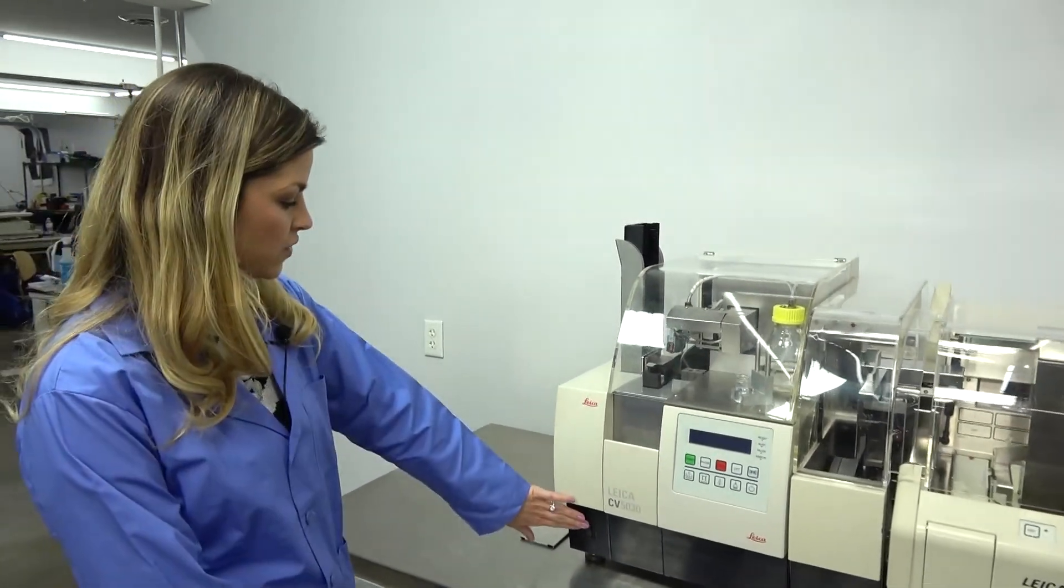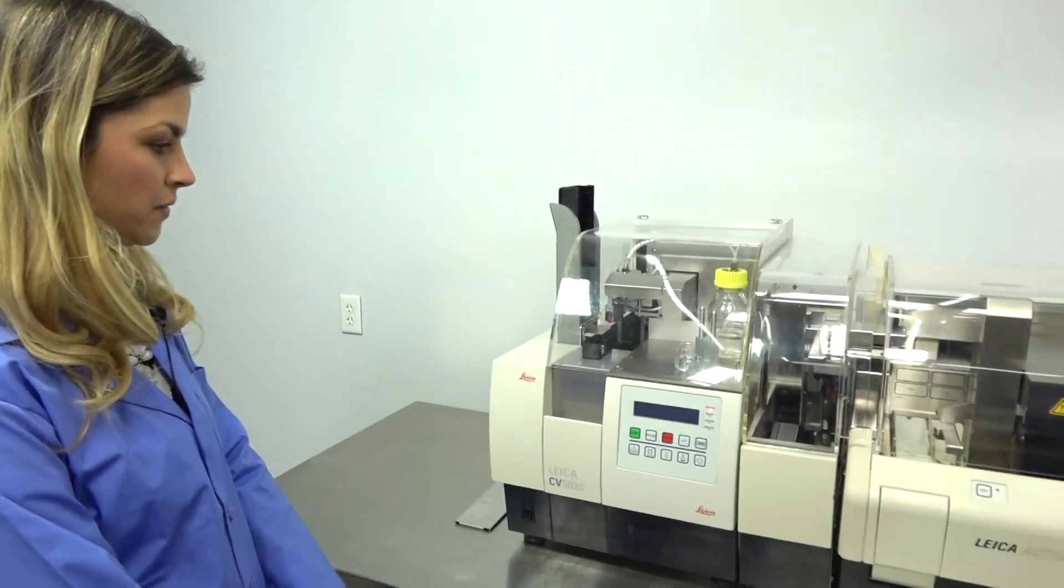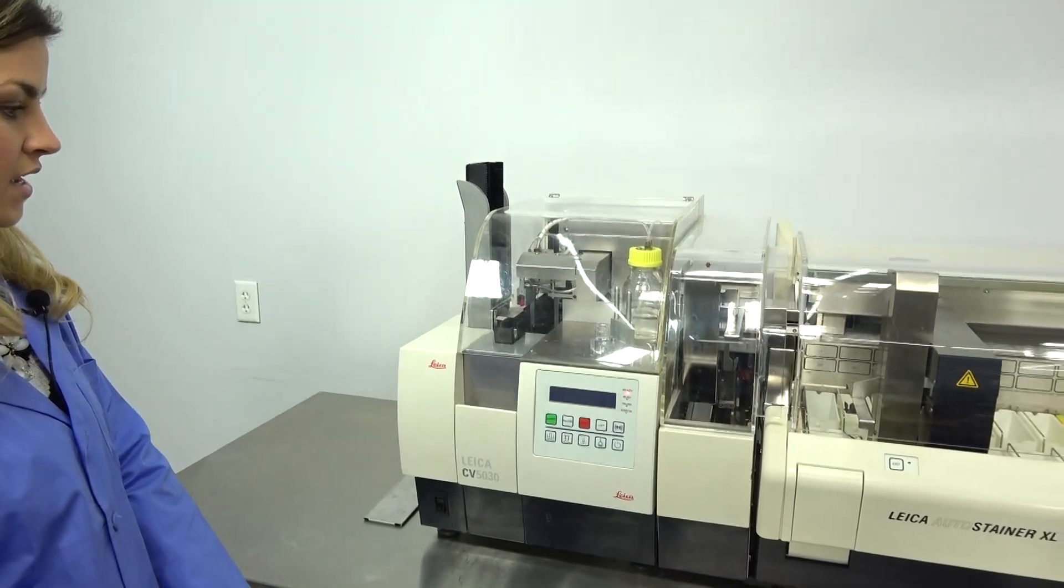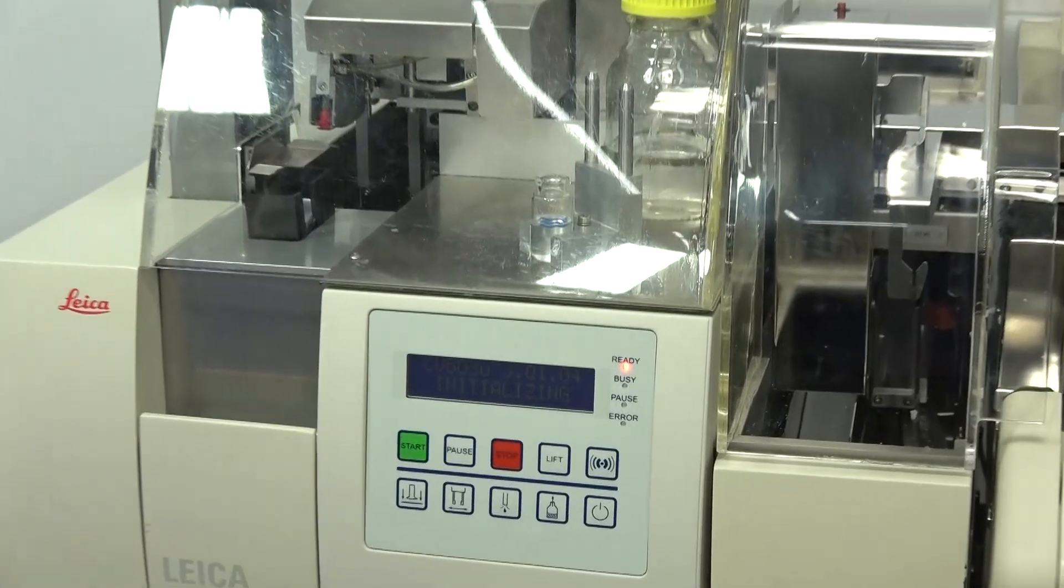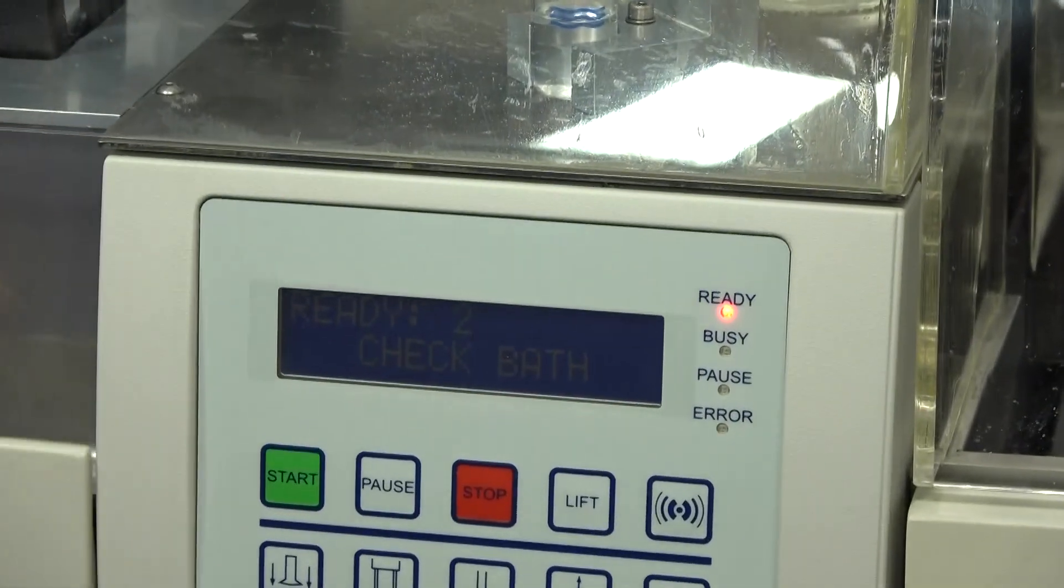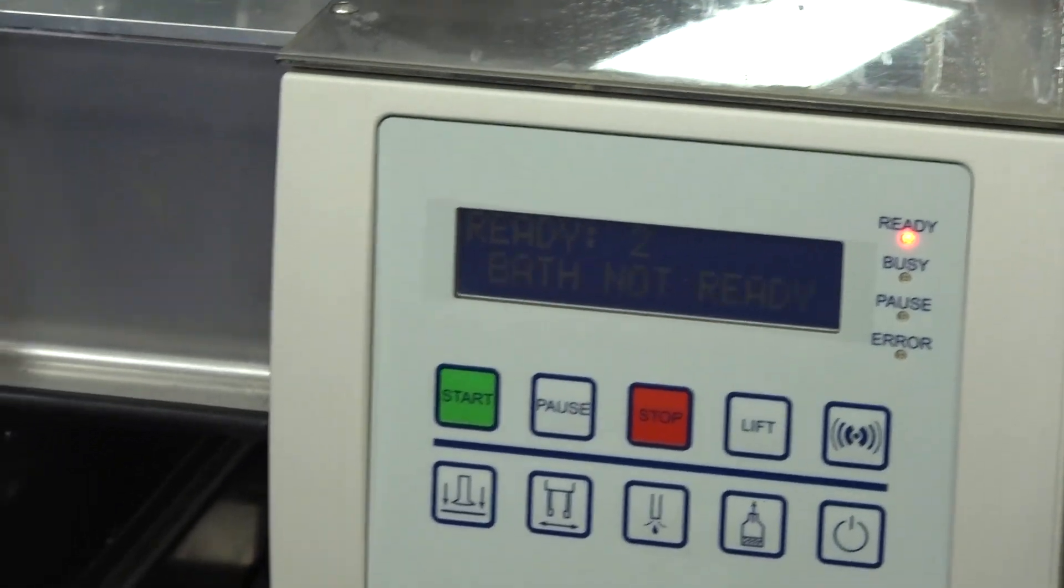To begin, you're going to initialize the Cover Slipper. Here on the digital display, it's going to tell you the initialization process. It's going to tell me to check the bath, which is located within this drawer, which you can easily pull out and close.